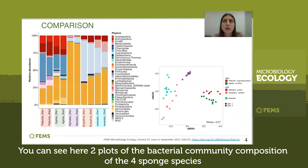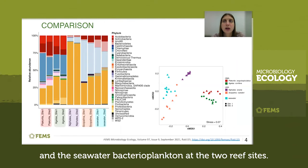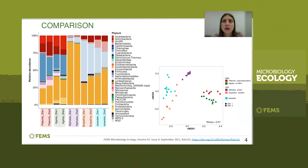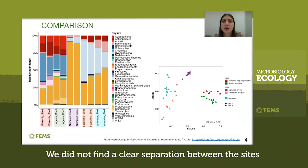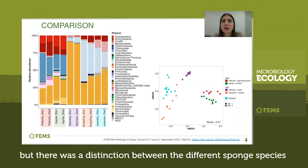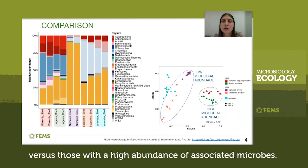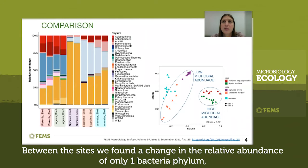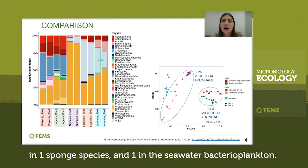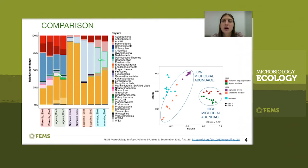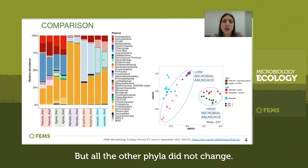You can see here two plots of the bacterial community composition of the four sponge species and the seawater bacterioplankton at the two reef sites. We did not find a clear separation between the sites, but there was a strong distinction between the different sponge species — especially between sponges with low abundance of associated microbes versus those with a high abundance. Between the sites, we found a change in the relative abundance of only one bacterial phylum in one sponge species and one in the seawater bacterioplankton, while all other phyla did not change.